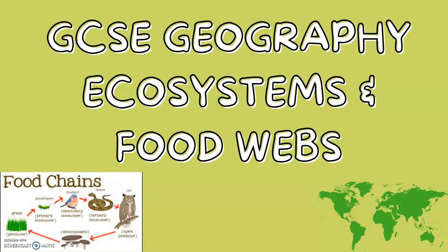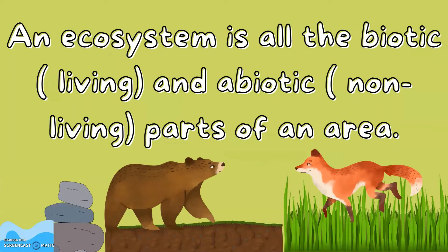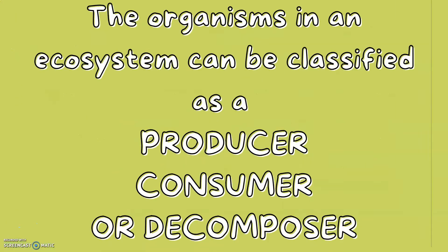GCSE Geography: Ecosystems and Food Webs. An ecosystem is all the biotic (living) and abiotic (non-living) parts of an area. The organisms in an ecosystem can be classified as either a producer, consumer, or decomposer.